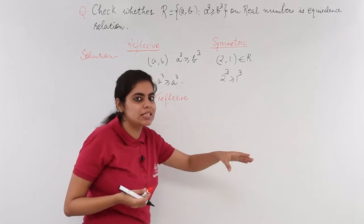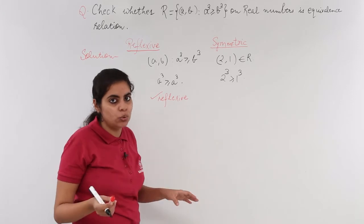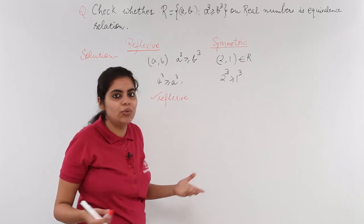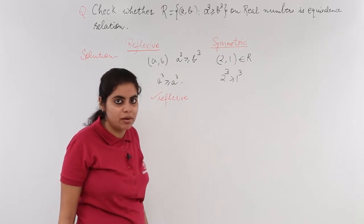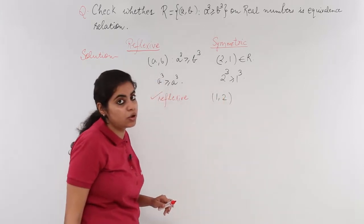We need to move on to the next step to check whether it is transitive or not. But if it is not symmetric, then directly I can say it is not an equivalence relation. I don't need to check transitivity as well.